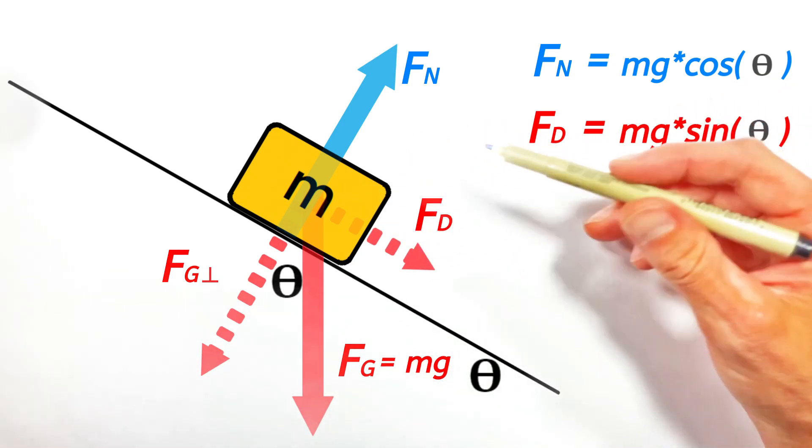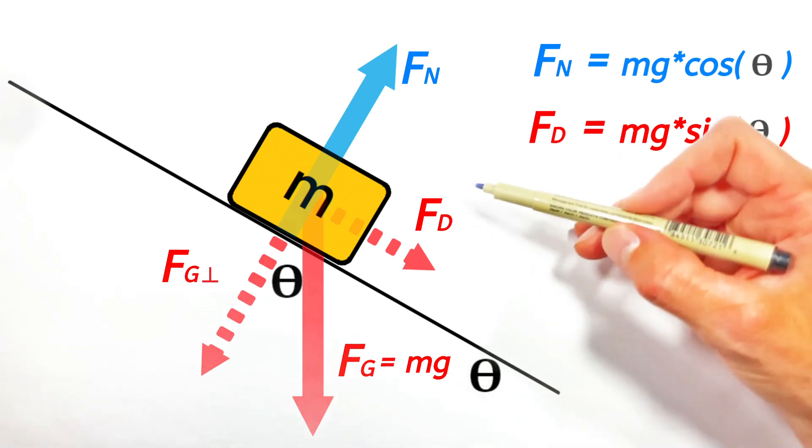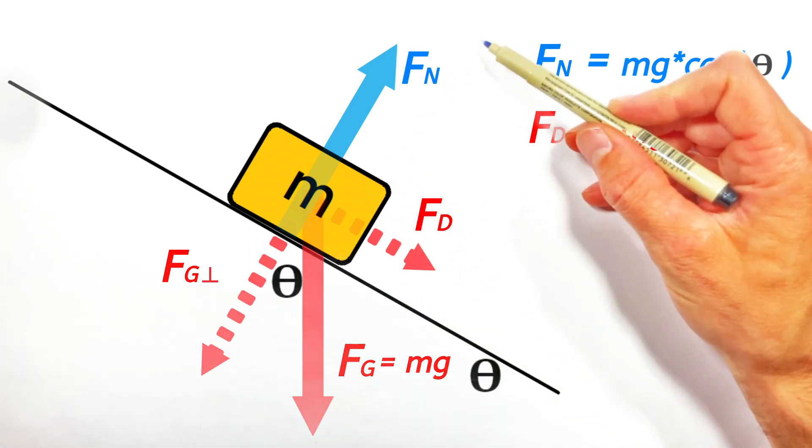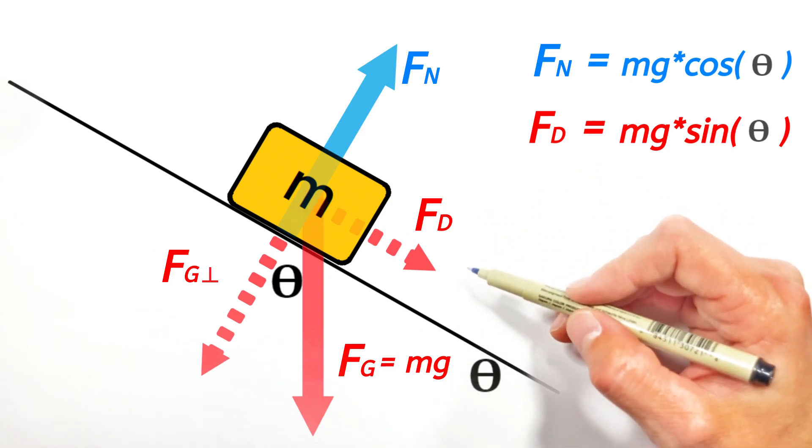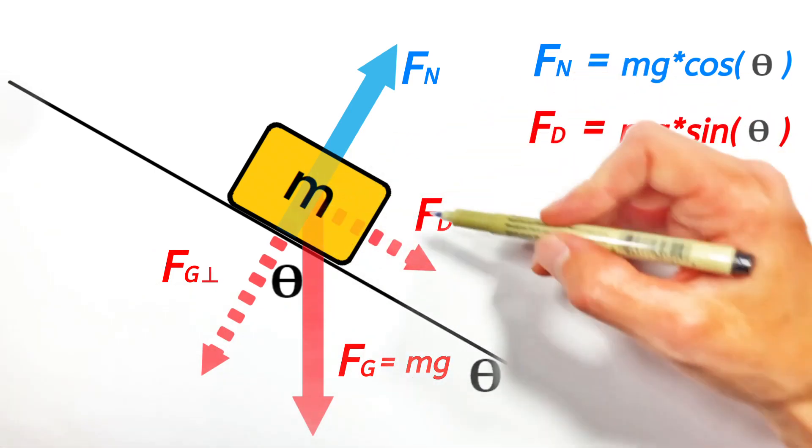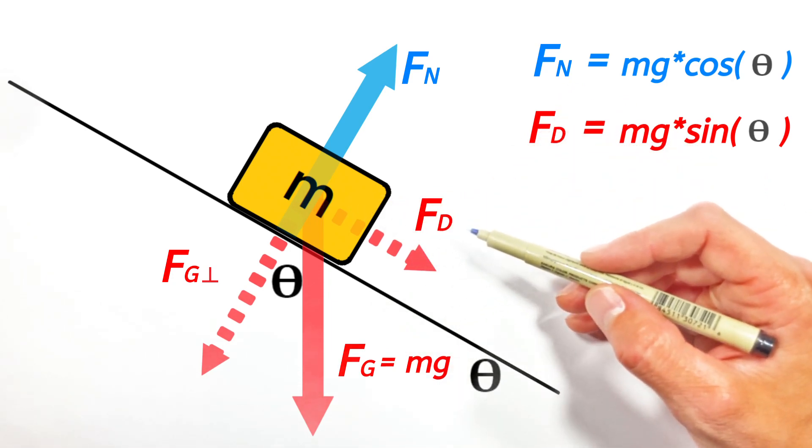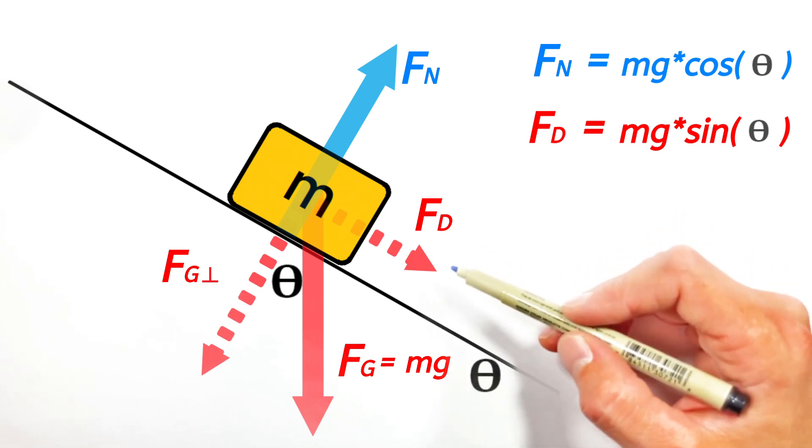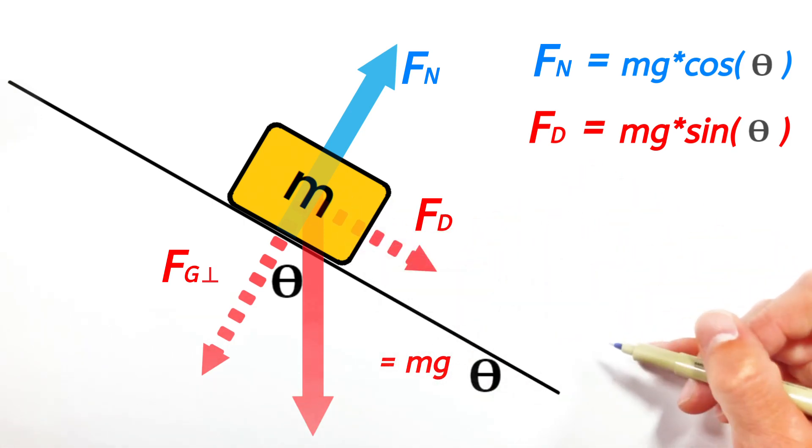Now one thing I always remind my students of, and you have to be really careful about this, is when you're drawing a free-body diagram, you always show the actual forces acting on an object as solid lines, and components are dotted lines. So if you're drawing a free-body diagram of a block on a hill, you always want to show that force down the hill as a dotted line. There isn't an actual force down the hill. What there is is just a component of gravity, which is parallel to the hill.